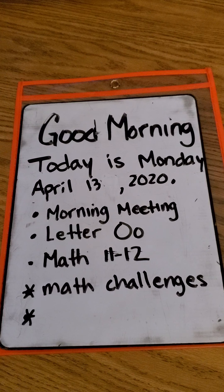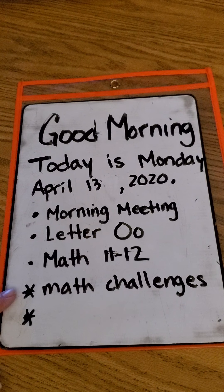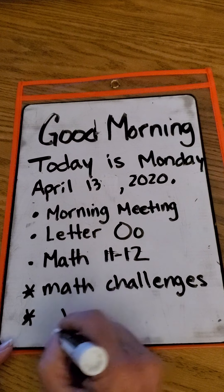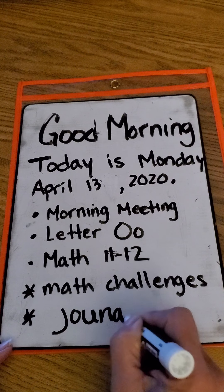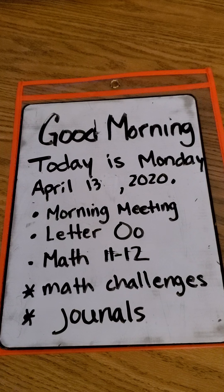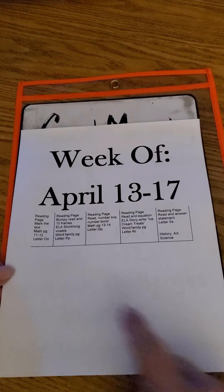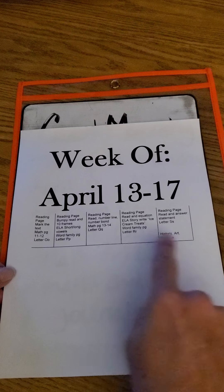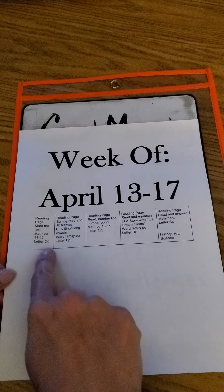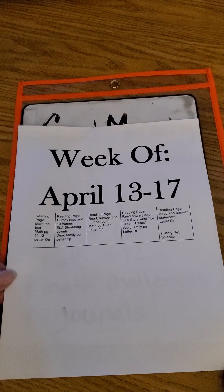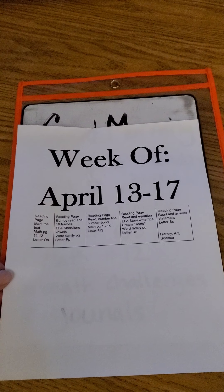You don't have a reading page this week. The letter O, math 11 and 12. And then I'm going to talk about some math challenges and one of your journals. If you want to find it in your packet, there's this page — it tells us everything that we're doing. We're not going to do the reading page, so it says mark the text or bumpy read. Unless you want to review it, we're not going to work on that. So this will be what we're working on this week.